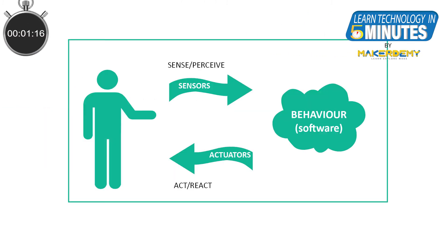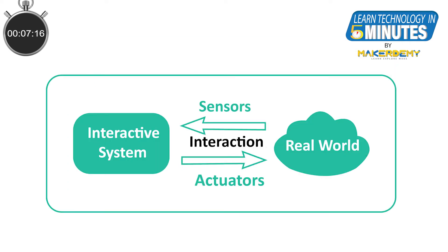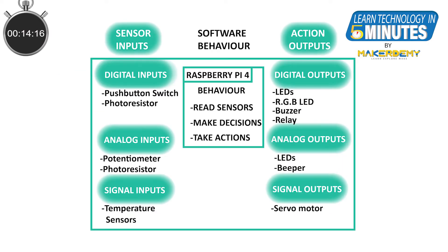In layman's terms, physical computing refers to the creation of devices that interact with the world around them. Such a device would be able to sense its environment, process the data, and perform some action. The functions of any physical computing project can be split in three ways: the computer first measures the inputs through sensors, then it uses software to think about what it will do with those measurements, then it makes something happen as a response with an actuator.